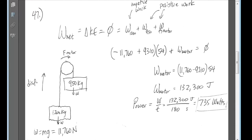So these two are positive, this one is negative, and their sum adds to zero, because it starts and stops at rest, its delta KE is zero.